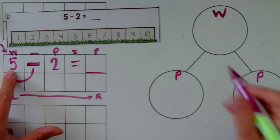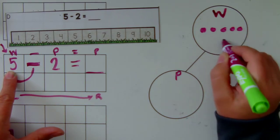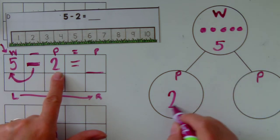My whole is 5. 5, 1, 2, 3, 4, 5, part is 2.